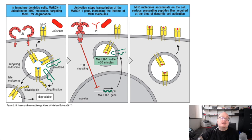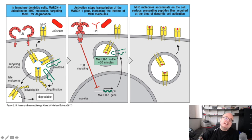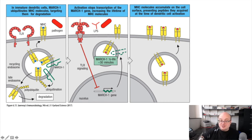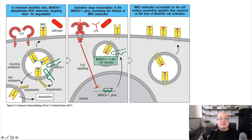Another important regulatory molecule is MARCH1. In immature dendritic cells — and in professional antigen-presenting cells broadly — MARCH1 is a negative regulatory enzyme with ubiquitinating function. What it does is ubiquitinate MHC class II, and if MARCH1 ubiquitinates MHC class II, it's going to be targeted for degradation by the proteasome system. So the more MARCH1 we have, the less antigen presentation is going to happen. We see lots of MARCH1 in immature dendritic cells because these cells are not activated and are not actively presenting antigen.